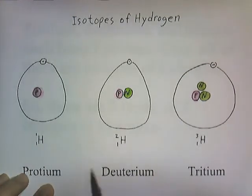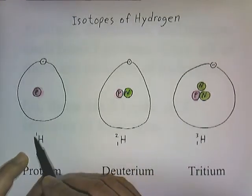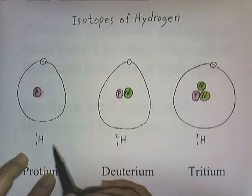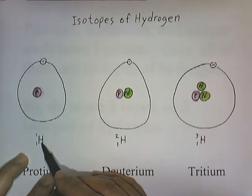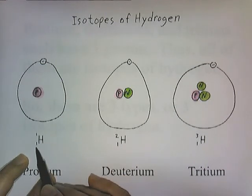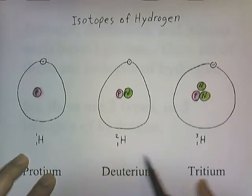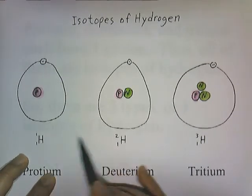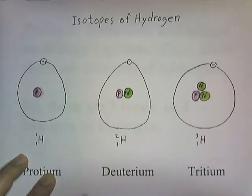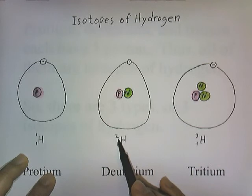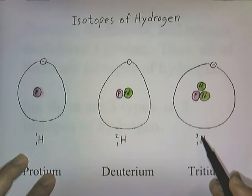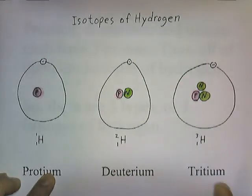These symbols give information about particular types of atoms. H is the symbol of the element. The number on the bottom is the atomic number — one, one, one. The number on top tells the number of protons plus neutrons, which is the total. It doesn't tell you how many protons alone, but gives you the sum of protons and neutrons.